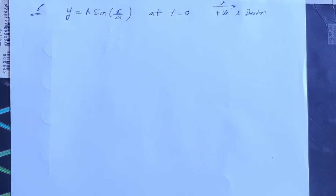The shape of a string at t equals 0 is given by y equals A sin(x/a), where a and capital A are constants.